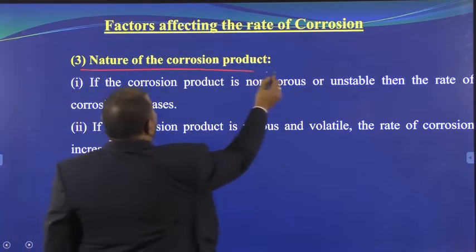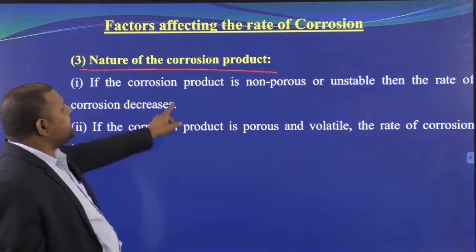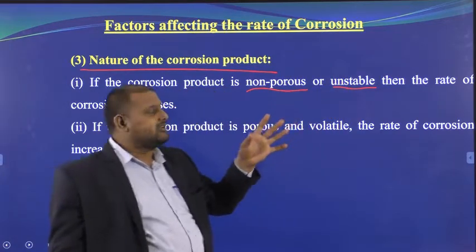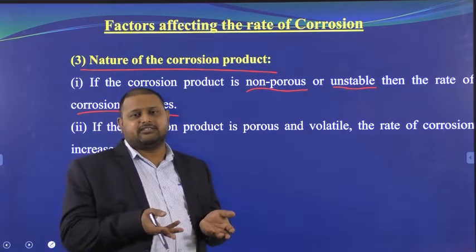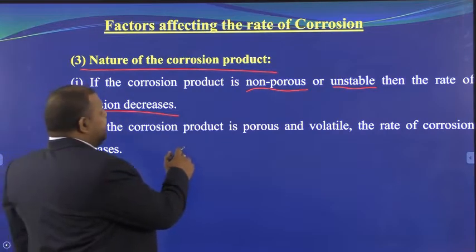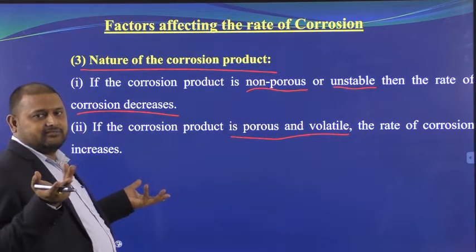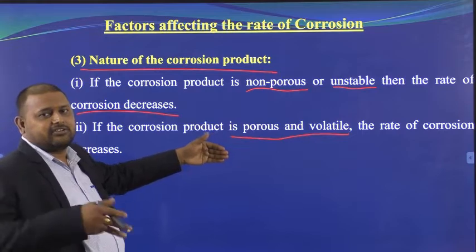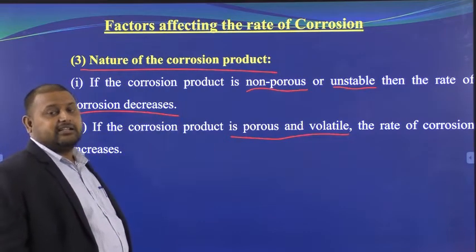The third factor is the nature of the corrosion product. If the product is non-porous or unstable, the rate of corrosion decreases — a non-porous film blocks further attack, and an unstable product that breaks down also stops further corrosion. If the product is porous or volatile, the corrosion rate increases.